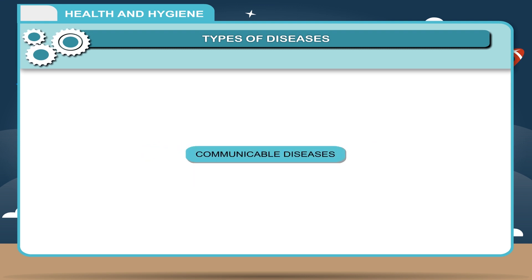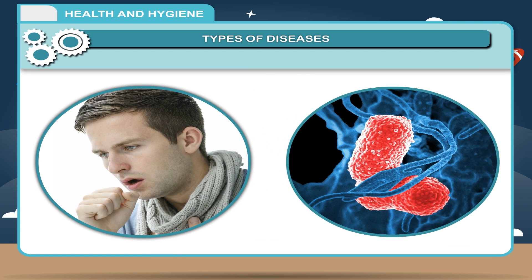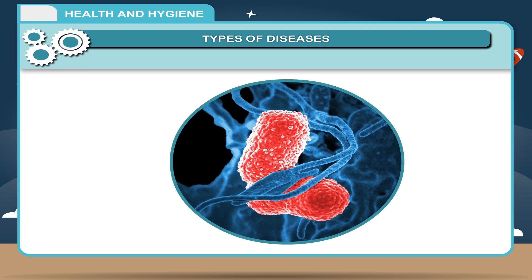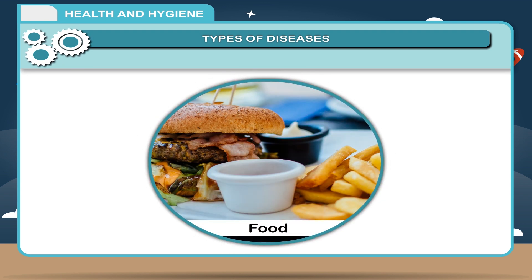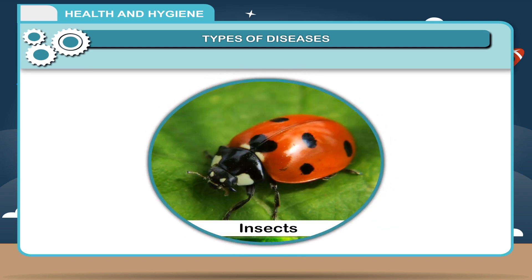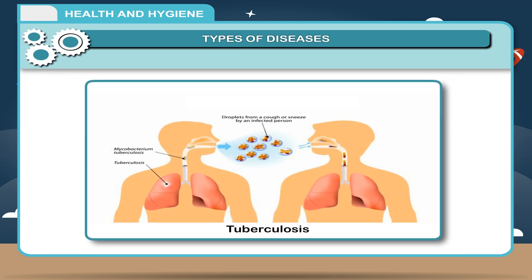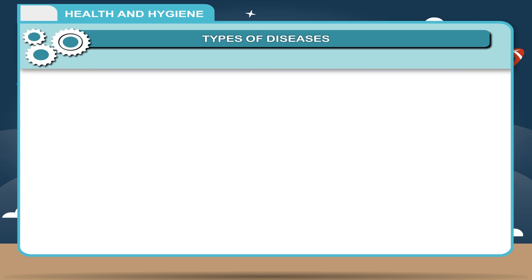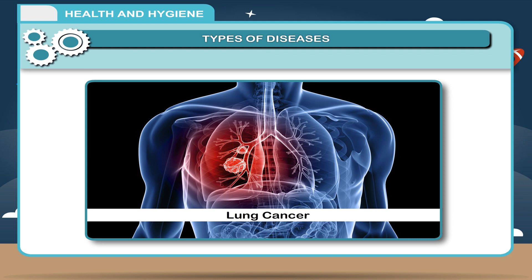Communicable Diseases: The diseases which spread from an infected person to a healthy person and are caused by microscopic organisms that attack the body are called communicable diseases. The media of spreading these diseases are air, water, food, contact and insects. Examples include malaria, cholera, tuberculosis and AIDS.